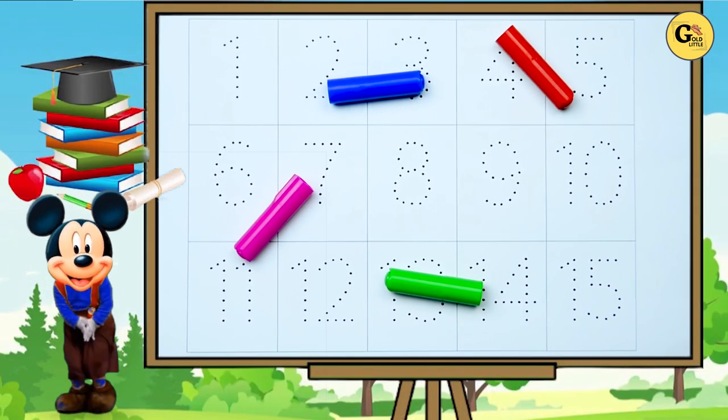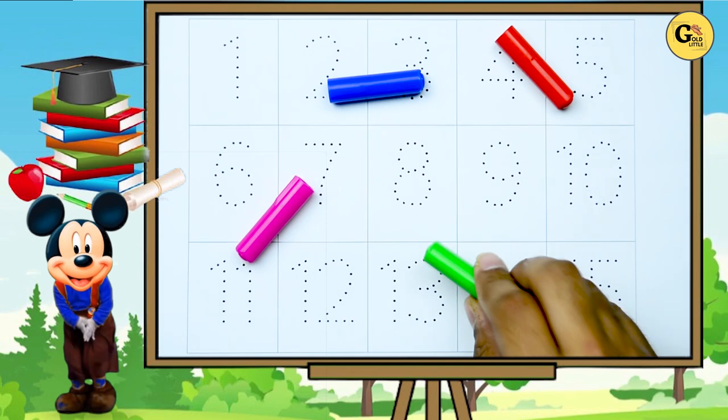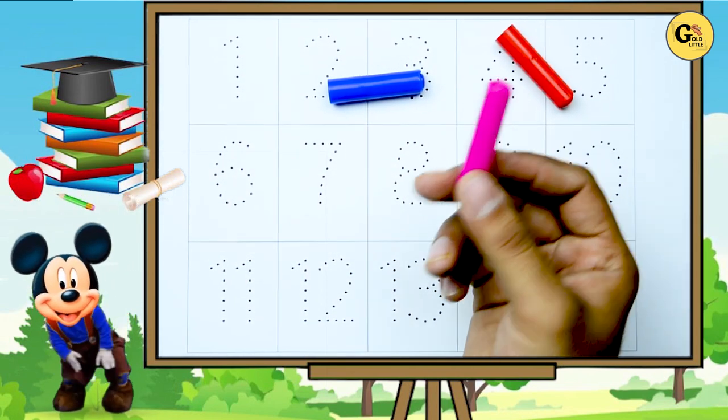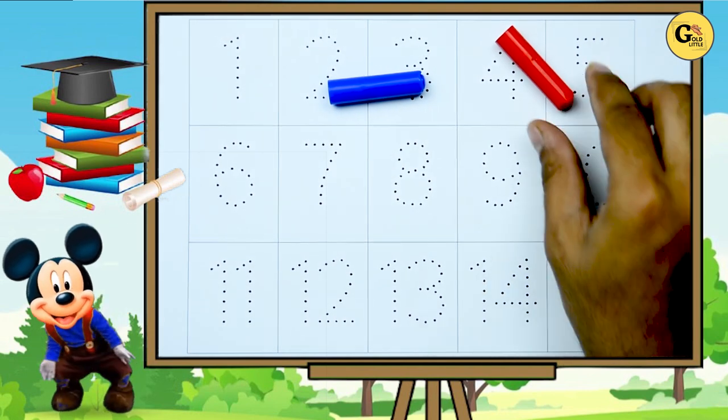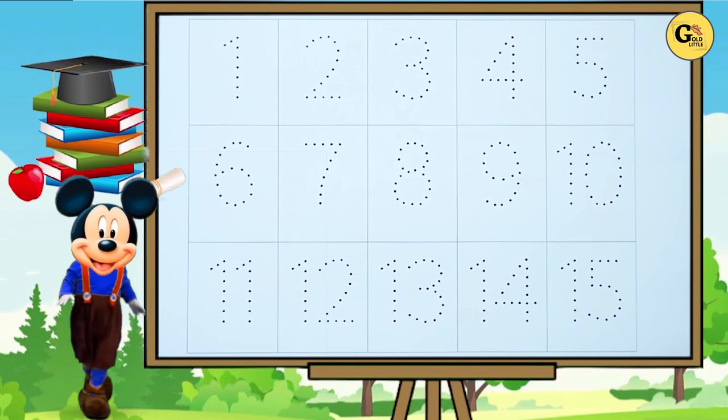Hello kids! Today we learn numbers. Let's start with colors. It's green color, pink color, red color, blue color. Now let's start.